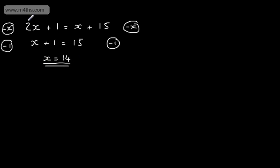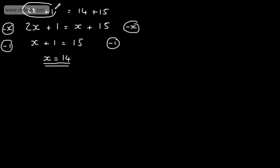We can check that: 2 times 14 is 28 plus 1, and that's going to give me 14 plus 15. Does that work? Well, this is 29 and this is 29, so we can see that we have the correct answer.